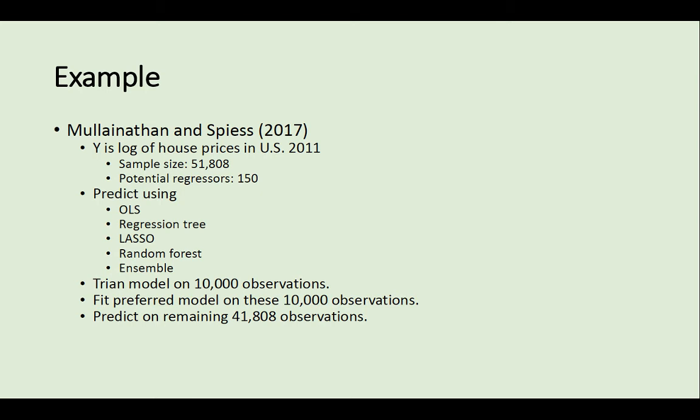Let me give an example. There is a famous paper from Nathanson in 2017. They want to predict house prices in the United States. They use the dependent variable as the log of house price in the United States in 2011. The sample size in their paper is 51,808 with 150 potential regressors.